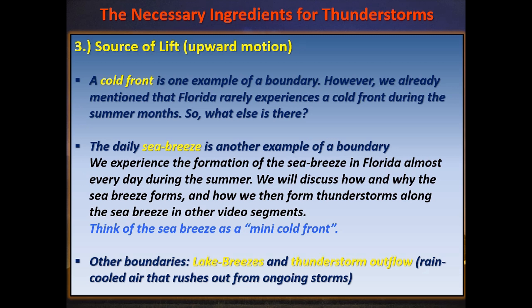Other types of boundaries include lake breezes and thunderstorm outflow. Thunderstorm outflow is that rain-cooled rush of air we feel ahead of approaching storms.